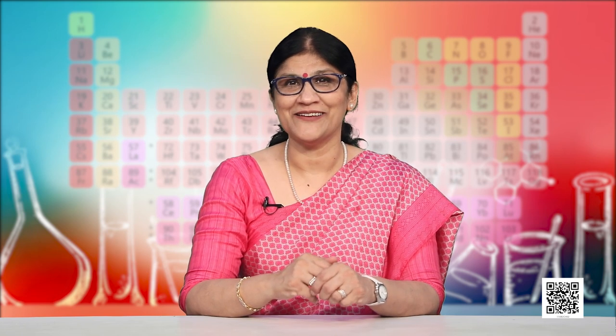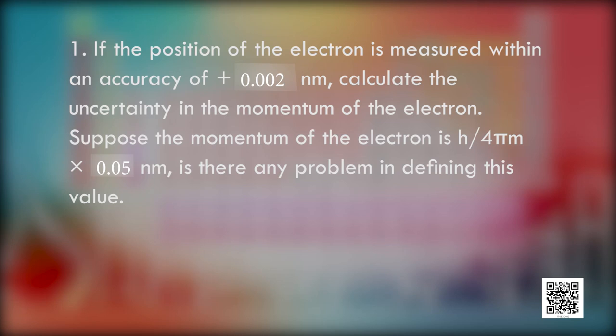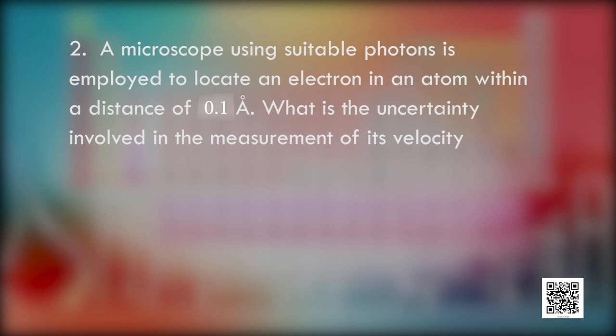Now we have the task for the day. If the position of the electron is measured within an accuracy of plus or minus 0.002 nanometers, calculate the uncertainty in the momentum of the electron. Suppose the momentum of the electron is h upon 4 pi m multiplied by 0.05 nanometers — is there any problem in defining this value? Here is another question: a microscope using suitable photons is employed to locate an electron in an atom within a distance of 0.1 angstroms. What is the uncertainty involved in the measurement of its velocity?